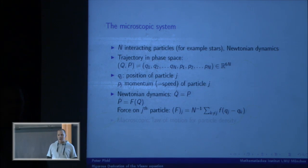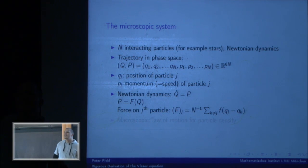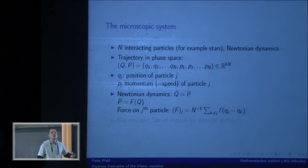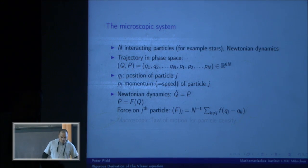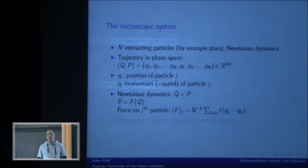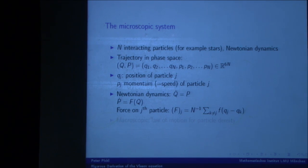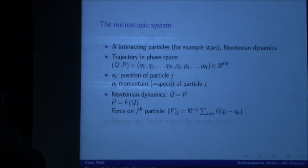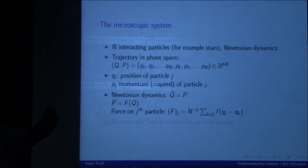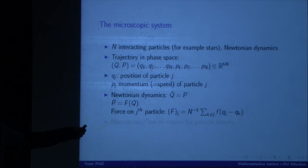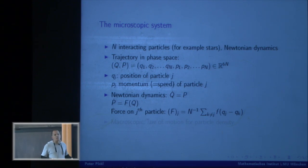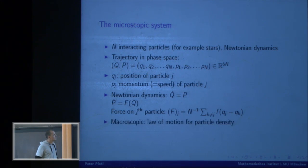You might say this looks unphysical — a coupling between two objects shouldn't change as you increase the particle number. But you can argue for it by rescaling the system. If you put more stars, the volume of the galaxy grows proportional to N, and you scale everything down so the volume is always 1. Rescaling space and time then directly gives you this N^{-1} factor.